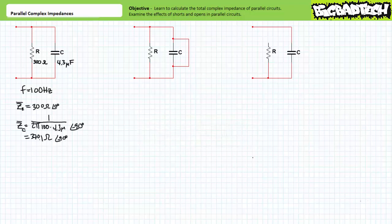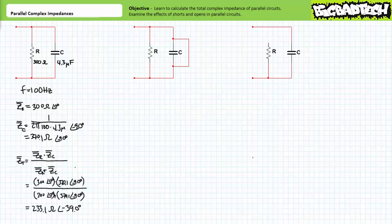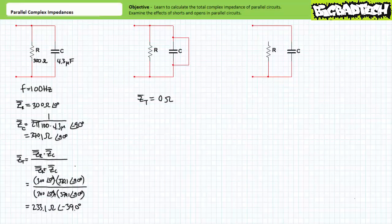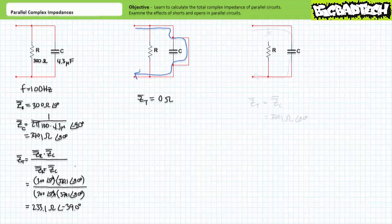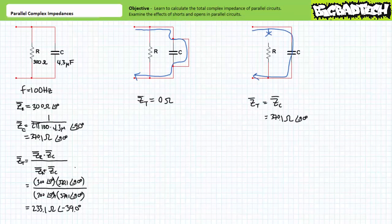The resistor represents an impedance of 300 ohms at an angle of zero degrees, and the capacitor represents an impedance of 370.1 ohms at an angle of negative 90 degrees. Ideally, the total impedance of this parallel relationship is 233.1 ohms at an angle of negative 39 degrees. If, however, we included a short across the terminals of the capacitor, the impedance of the whole parallel arrangement would drop to zero ohms, since all current will be routed through the short and around the parallel arrangement. Finally, if an open occurred such that one terminal of the resistor is dangling out into space, no current can flow through the resistor and only the capacitor remains in the circuit. The total impedance of this parallel arrangement with an open resistor is representative only of the capacitor: 370.1 ohms at an angle of negative 90 degrees.